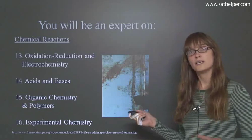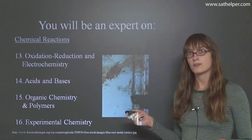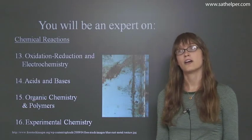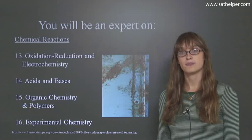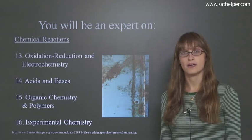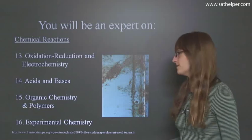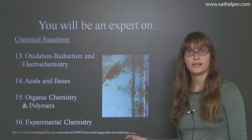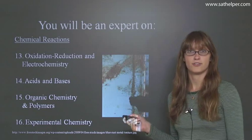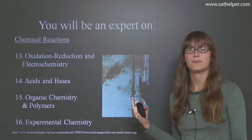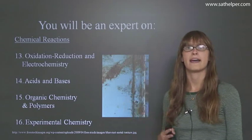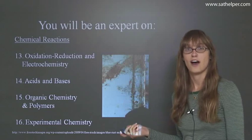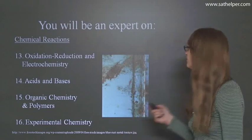Then at the end we're going to do a little bit of organic chemistry. It's not the main focus of AP chemistry, but it's important that you know the types of chemistry that happen in plants, animals, and humans. And lastly, we're going to do experimental chemistry — basically experiments where we apply everything we've learned so far. That should be a more fun chapter.